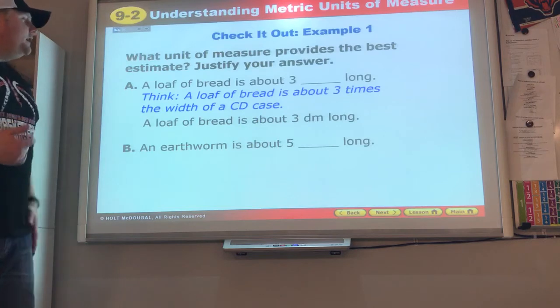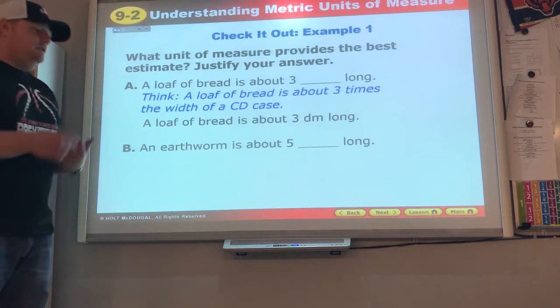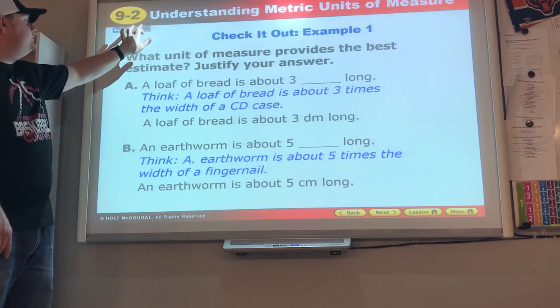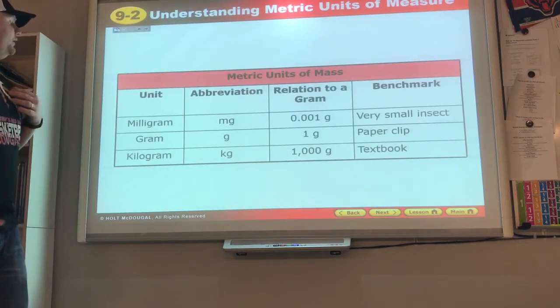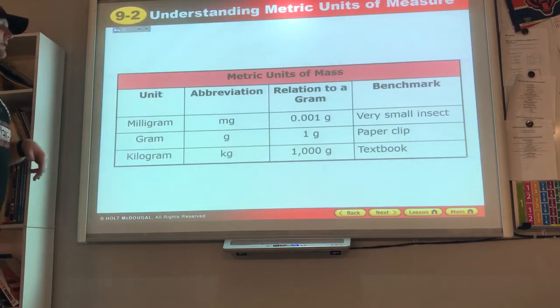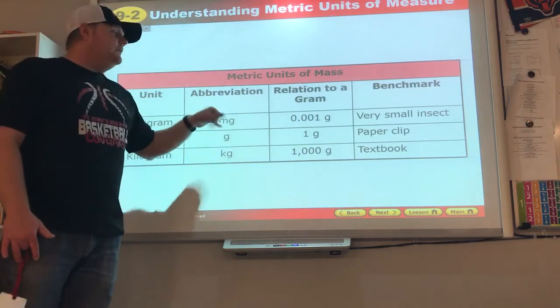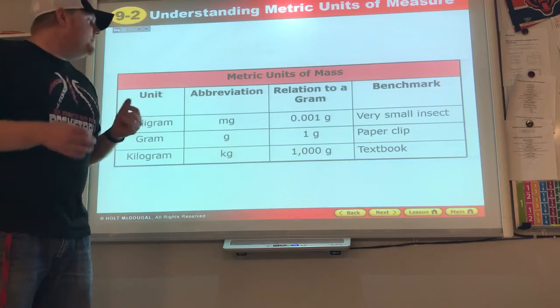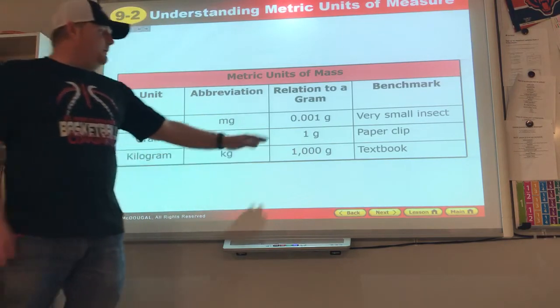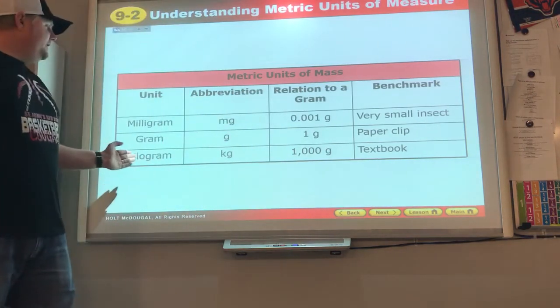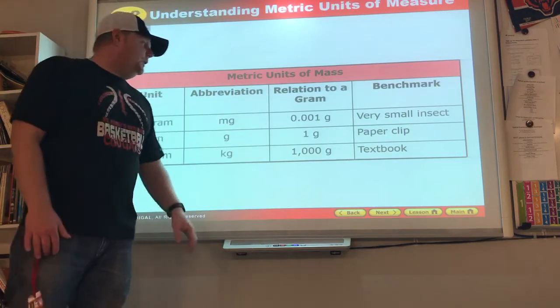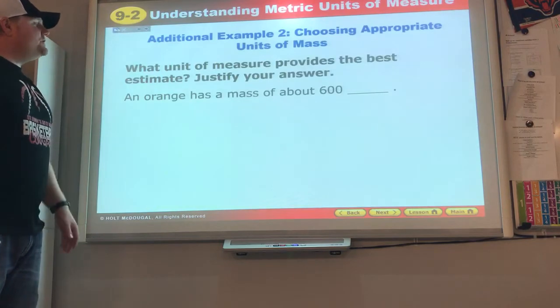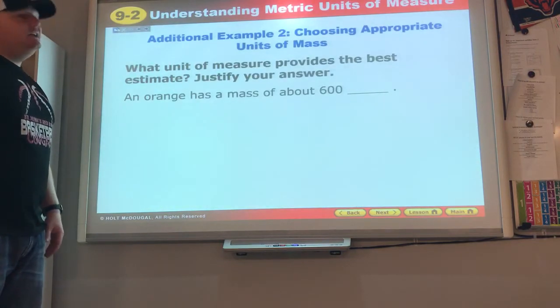An earthworm is about five - I'd say centimeters, knowing my thumbnail. Now we look at milligram, gram, and kilogram. Milligram: your pills are measured in 40, 60 milligrams - that's the weight of them. A gram is about a paper clip, not very heavy.